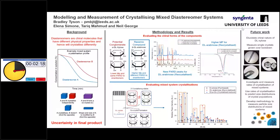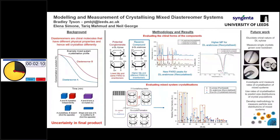In some cases, you can actually form co-crystals and other effects such as nucleation inhibition and also growth modification. This gives us quite a lot of uncertainty in our final product. So what we're looking into is evaluating the chiral forms of our products.